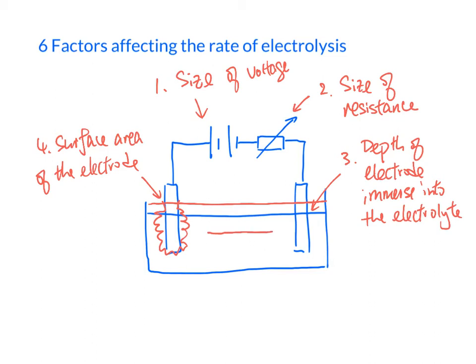The fifth factor is the distance between the two electrodes. If we have the two electrodes come closer, then that will also affect the rate of electrolysis.